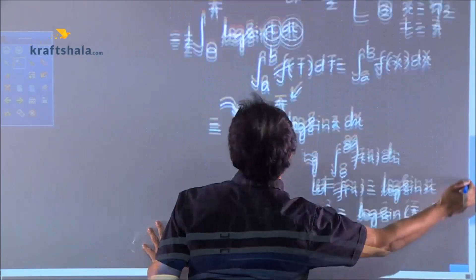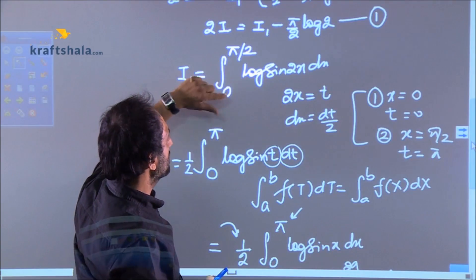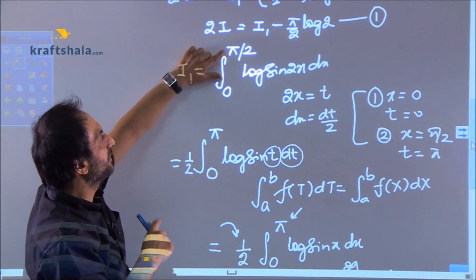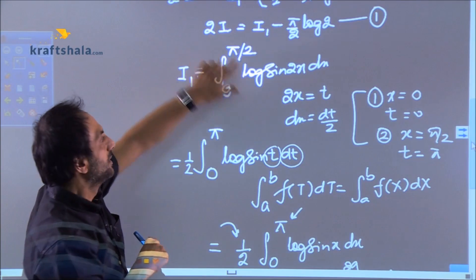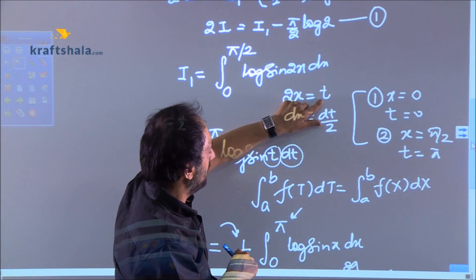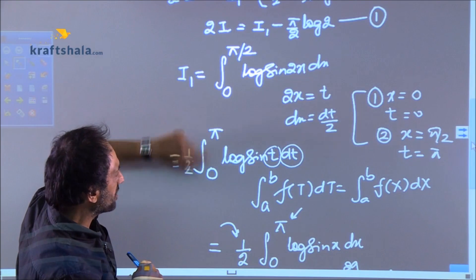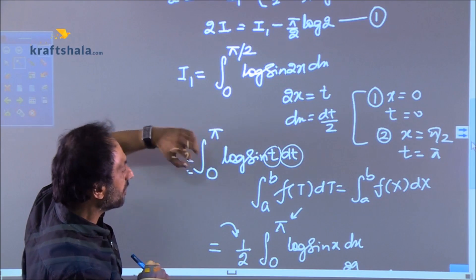Let me repeat what we have done. Initially when we took I₁ this was the expression with us. We were very happy with the limits because 0 to π/2 but we worked on 2x so by substituting 2x is equal to t we got log sin t dt but the limits were changed. So then we worked on limits.